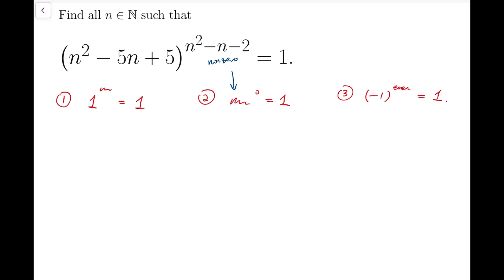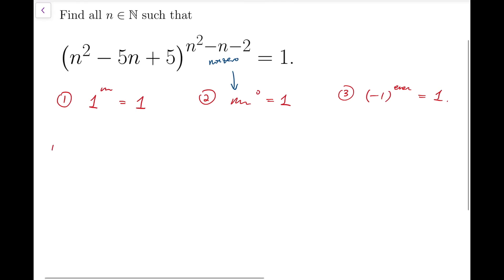Now for the first case, because we want the base to be 1, so that means n squared minus 5n plus 5 has to be 1. And that means n squared minus 5n plus 4 equals 0. We can factorize and find that n has to be 1 or 4. And of course, when n is 1 and 4, n squared minus n minus 2 are legit numbers. So 1 to the power of that is surely equal to 1.